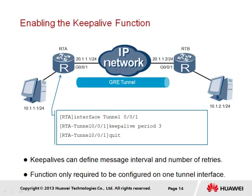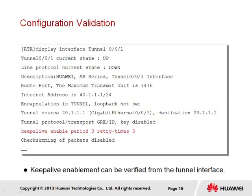Keepalive messages are configured within the tunnel interface view using the keepalive command. We are able to set the keepalive period as well as the number of retries in the event that a response is not received from the peering interface. Here the period has been changed to 3 seconds; however, the number of retries has not been configured, meaning the default number of retries will be used. Returning to the display interface tunnel command output, we find that the keepalive function is now enabled, the period is set to 3, and the number of retries remains at the default of 3. In this instance, keepalive has only been configured on RTA, allowing us to validate tunnel connection status since keepalive responses will be returned by RTB without requiring the feature be enabled on the peer.